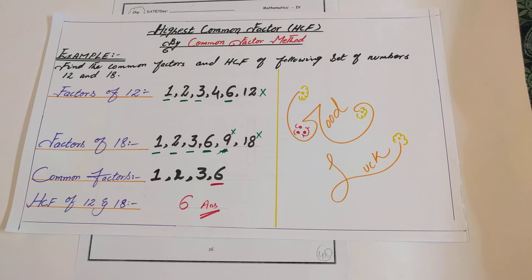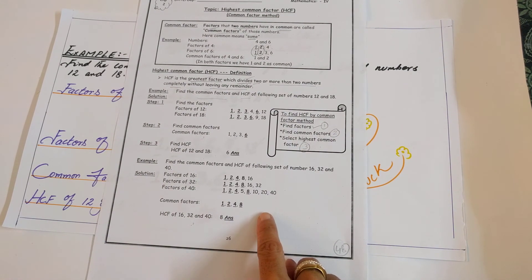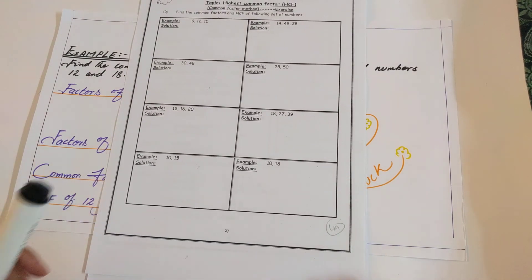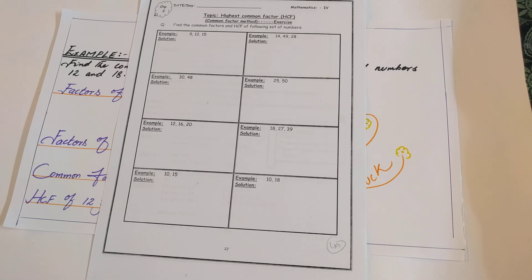I hope you understand this lecture on finding the Highest Common Factor by the common factor method. Using this example, you can also solve the second example in your booklet by yourself using the same method. Now open your booklet to page number 49, where exercises are given for practice. Solve all the examples with the help of this lecture. If you feel any confusion, watch the video again and follow the instructions. You can also ask me about any problems. Thank you.